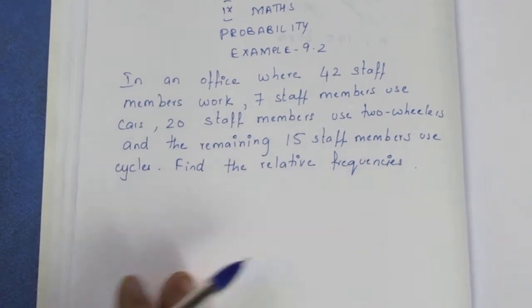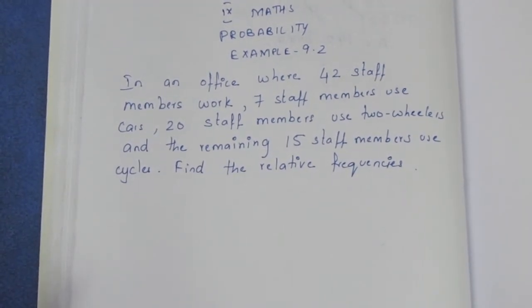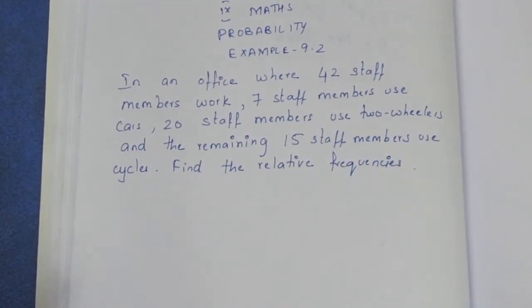Find the relative frequency. The relative frequency is the probability — you can find the probability from this.